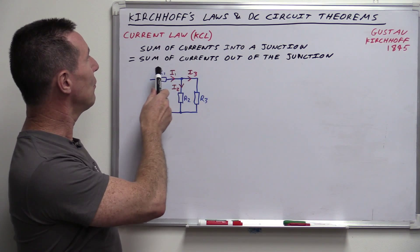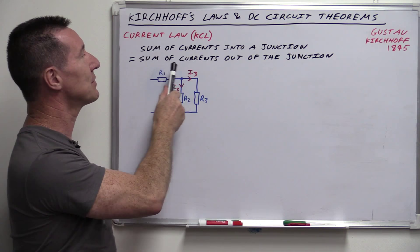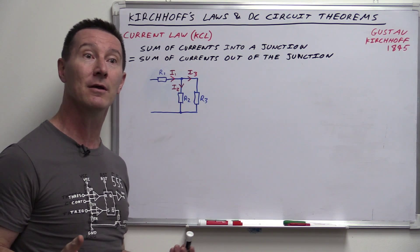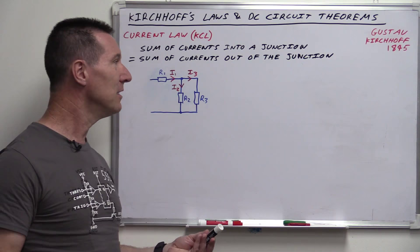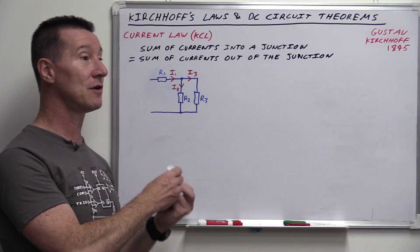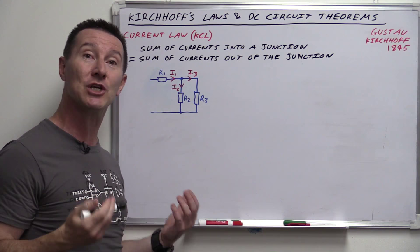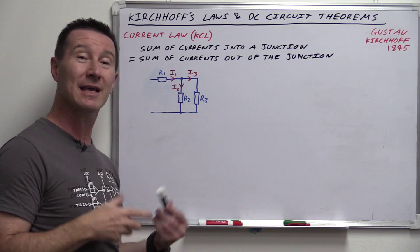Kirchhoff's Current Law states, in a roundabout way, the sum of currents into a junction equals the sum of currents out of a junction. Current in must equal current out. That's it — that's the entirety of Kirchhoff's Current Law. Nothing more complicated than that. Just like the fundamental laws of physics, like the conservation of energy, effectively what Kirchhoff is saying here is this is a conservation of charge. If you put charge into a circuit, it must come out.